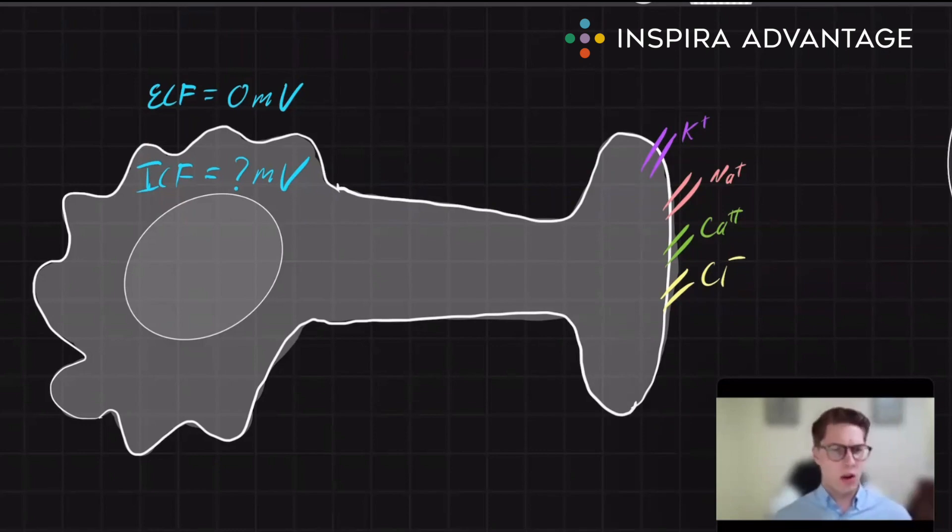A neuron, or really any cell for that matter, has some sort of charge compared to its environment. By convention, we always label the ECF, or extracellular fluid, the area outside of the cell, as having a voltage of zero, which you can see we've done right here.